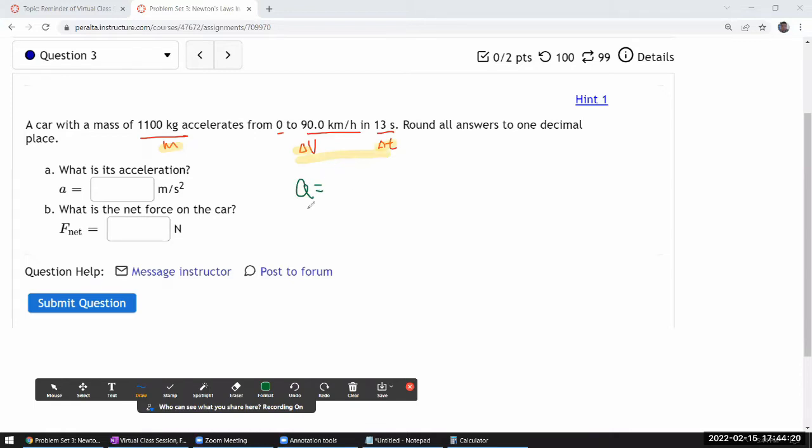the definition of acceleration, especially average acceleration: change of velocity over change of time. And if you want instantaneous acceleration you take the derivative. I guess the only potentially challenging thing about this is it's giving you the velocity numbers in kilometers per hour and they want the acceleration in meters per second, so